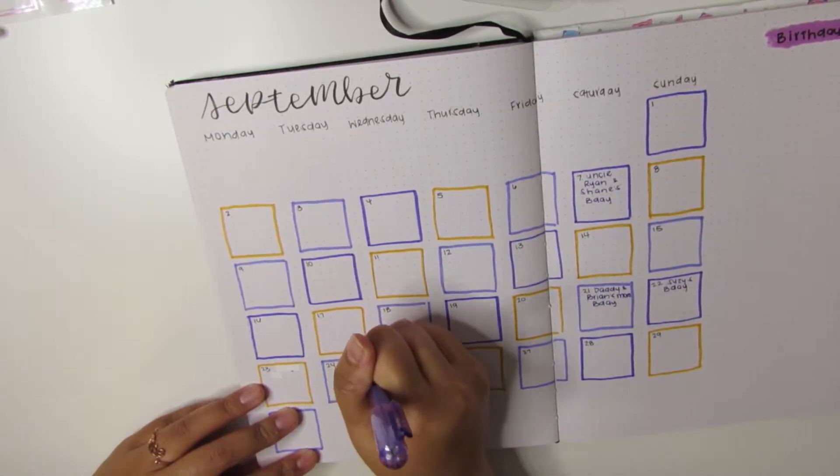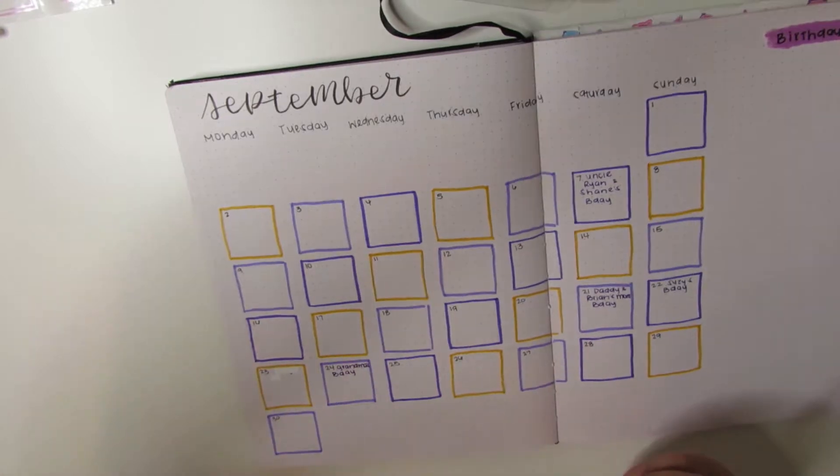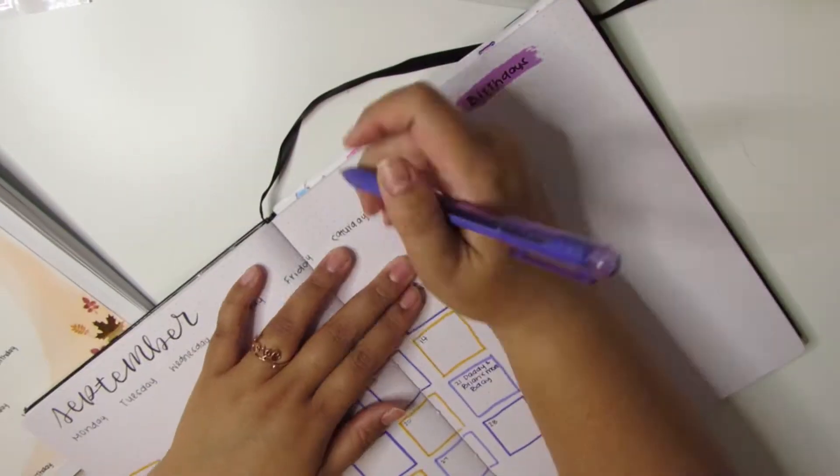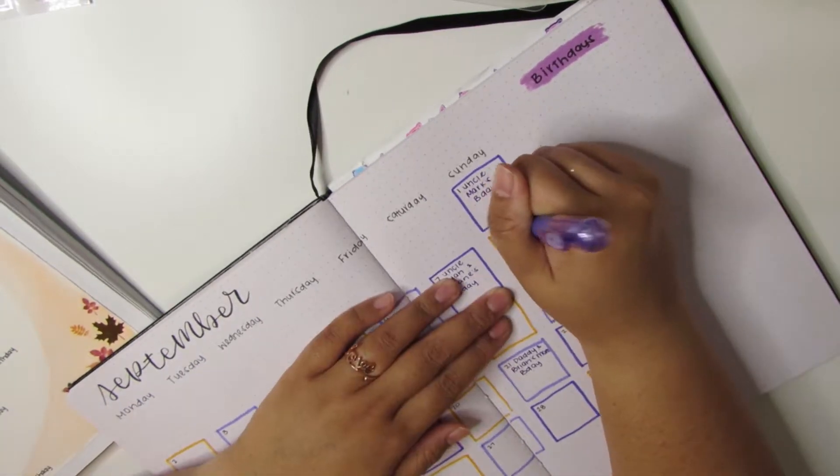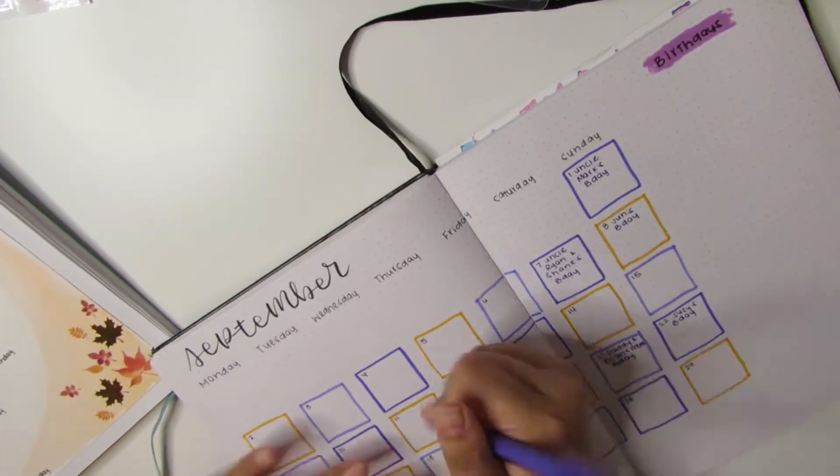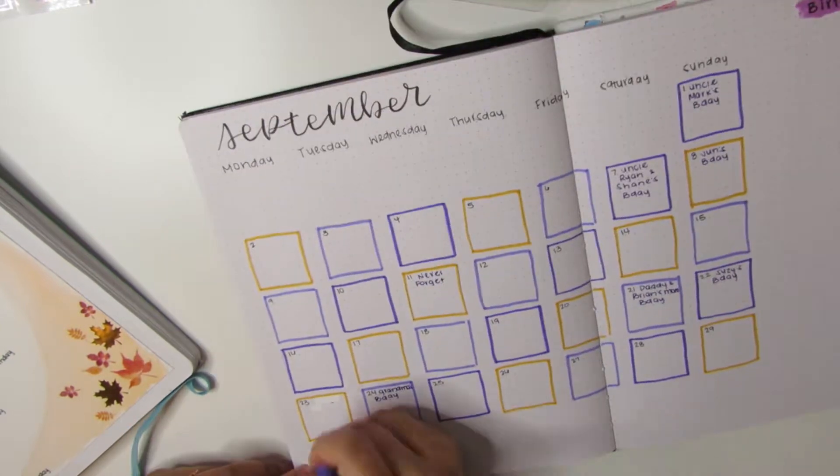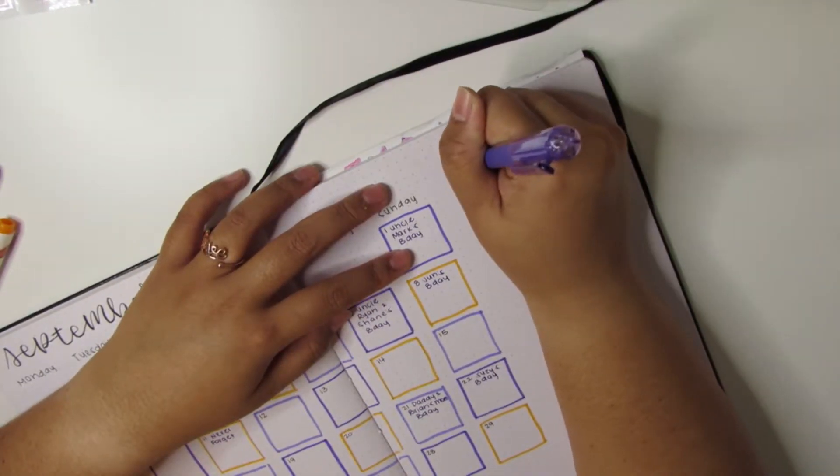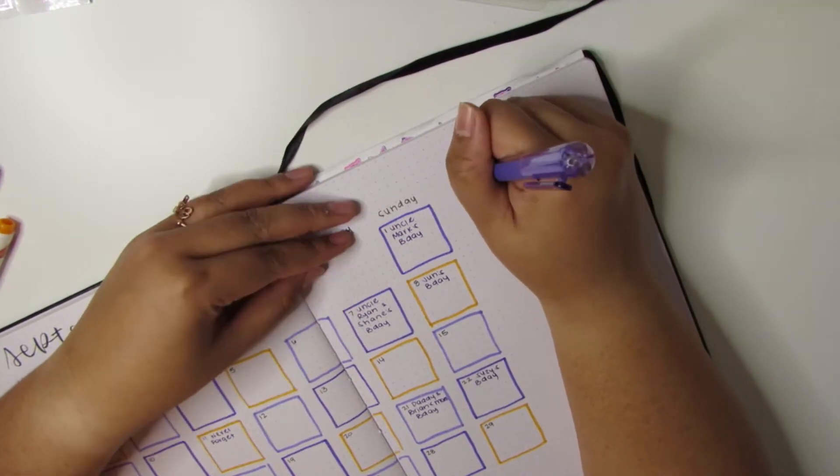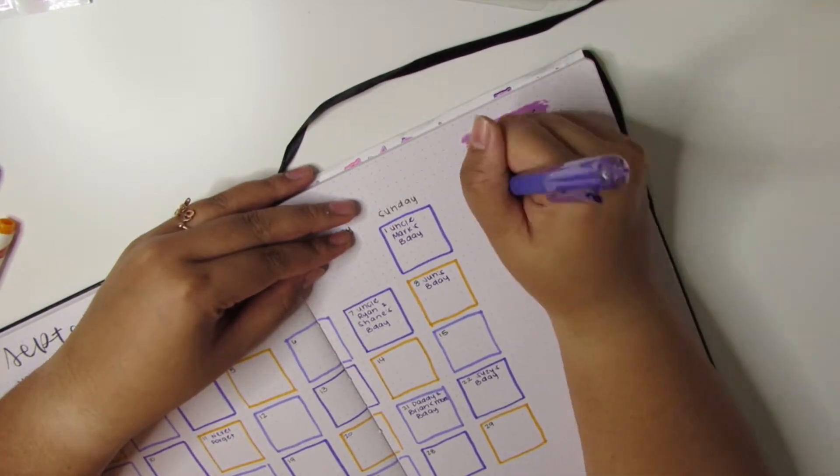You'll see it when I flip through my bullet journal from last year, but this way I have an easier time seeing when birthdays are and being able to space it out in my mind, which is a lot easier.